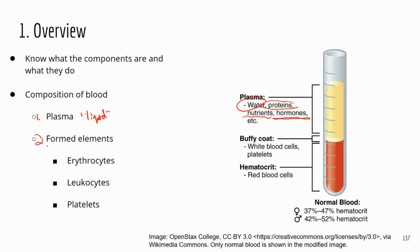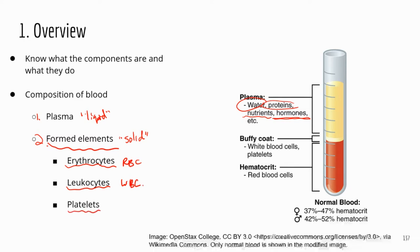The next main component of blood is the solid part, and we call this the formed elements. These refer to the different blood cells. Erythrocytes are red blood cells, leukocytes are white blood cells, and platelets are not cells in a strict sense because they are only cellular fragments. You need to know the other names — erythrocytes and leukocytes — because TEAS questions may use those terms.